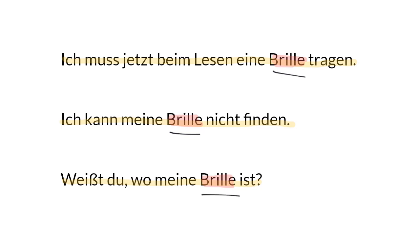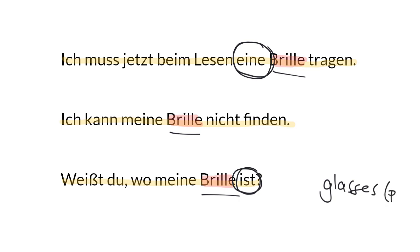I wonder if you noticed it in those three sentences — in the second one it's a little more subtle. Notice that we say one or a Brille, and the verb for Brille is singular in the third sentence. In English, we say glasses, and that's plural — we're not just saying it's one glass. It's two pieces of glass, so we call it glasses. But in German, we say a glass, because they're connected. There's something connecting the two pieces of glass, so it's one contraption. There is a certain logic to it.